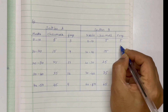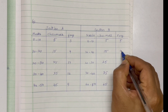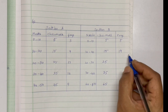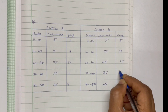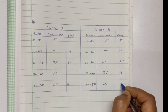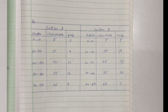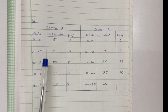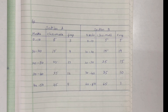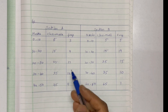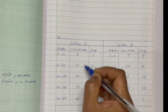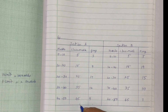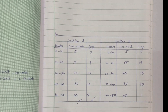We need to calculate the frequencies: 5, 19, 15, 10, and 1. Now we need to draw the graph. For Section A, we plot class mark on the x-axis and frequency on the y-axis.